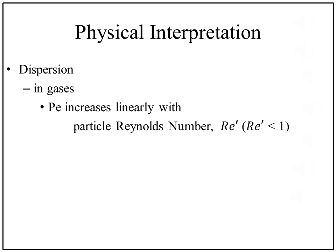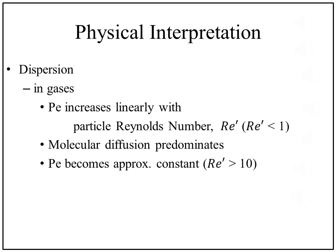At low Particle Reynolds number, that is Re' less than 1, the Peclet number increases linearly with the Particle Reynolds number. This is consistent with the hypothesis that at low Particle Reynolds number, molecular diffusion predominates. At Particle Reynolds number greater than about 10, the Peclet number becomes approximately constant.